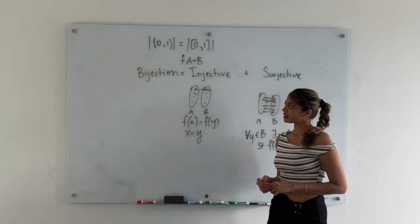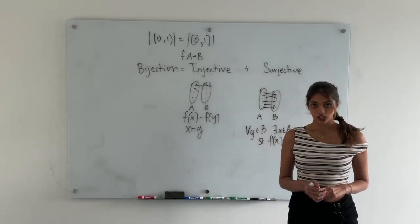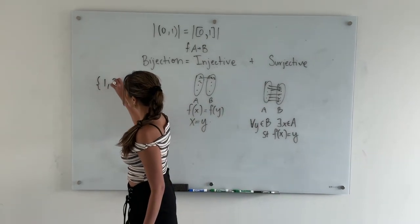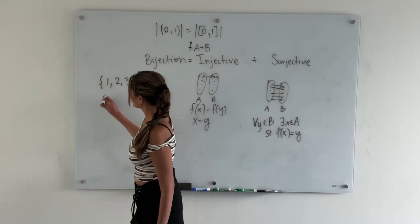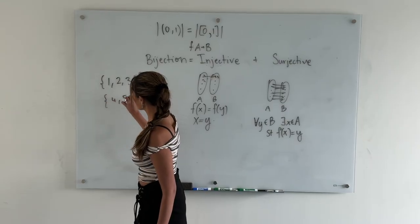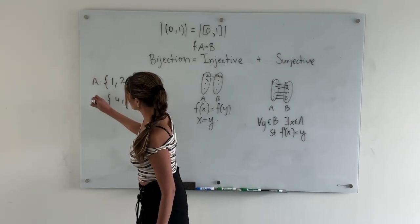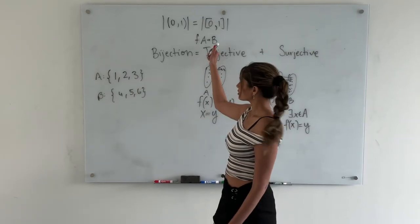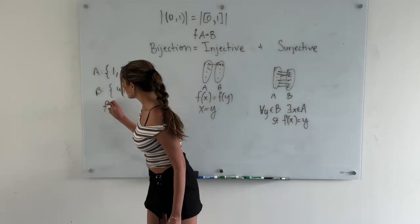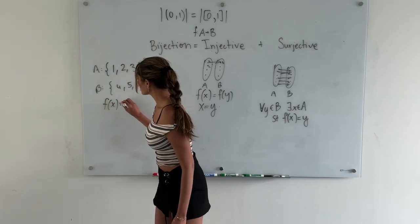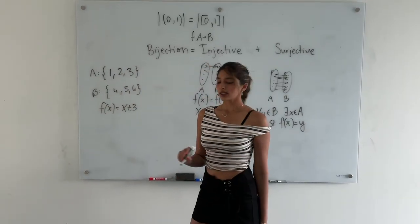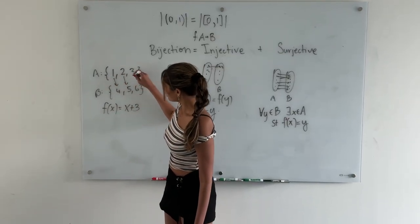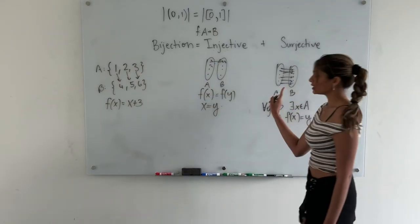To better understand this, let's go over an example of a bijection. Consider two sets: suppose you have {1, 2, 3} in one set, and {4, 5, 6} in the second set. We'll call this set A and this set B. Now define a function f that maps from A to B, as we see here, as f(x) = x + 3. You'll see that 1 maps to 4, 2 maps to 5, and 3 maps to 6, which satisfies both of these rules.